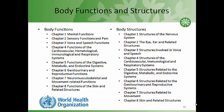Listed on this slide are the body functions and structures within the ICF. The eight chapters correspond to major body systems and are organized similarly across the body functions and body structures arena. For example, chapter one of the body functions focuses on mental functions, and correspondingly in body structures, chapter one focuses on structures of the nervous system.